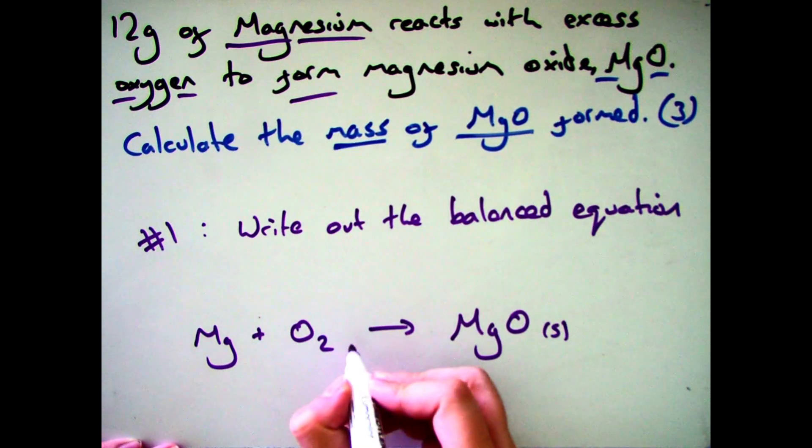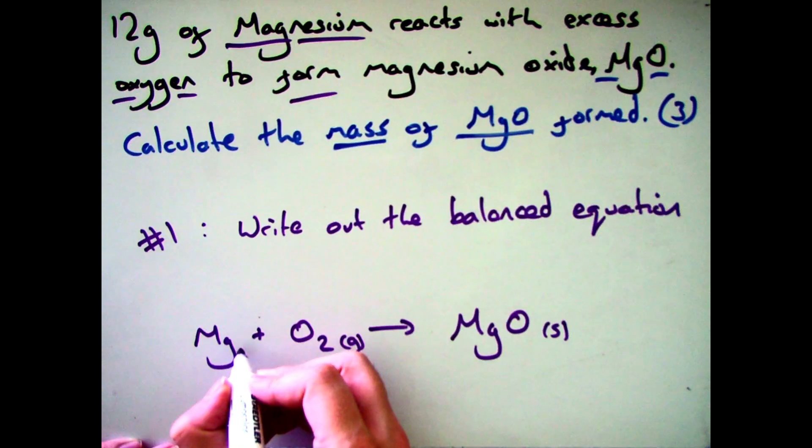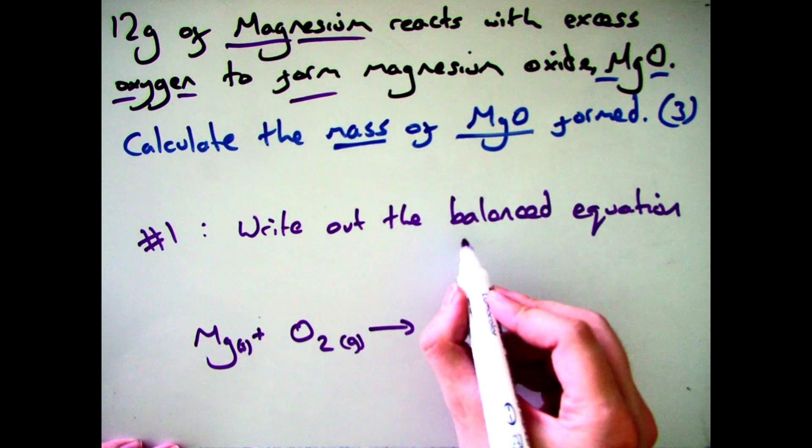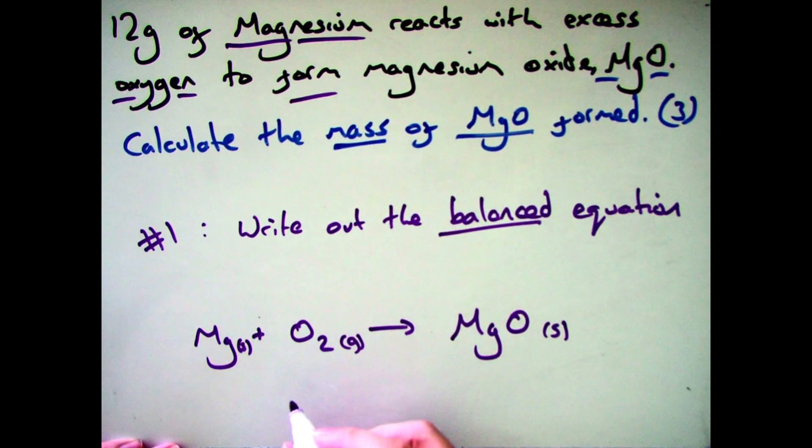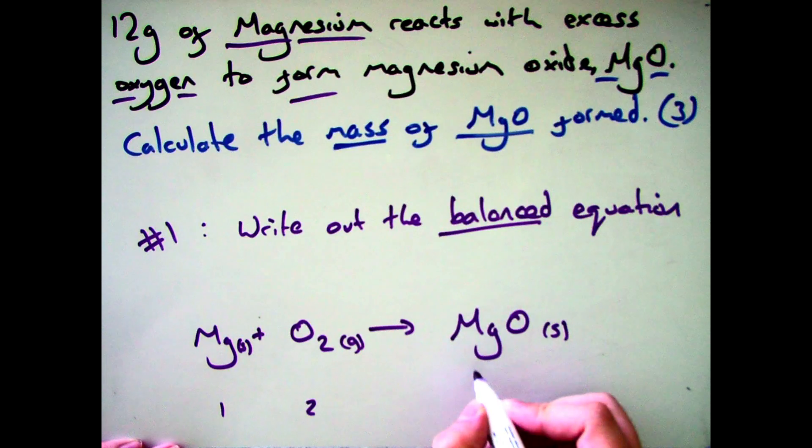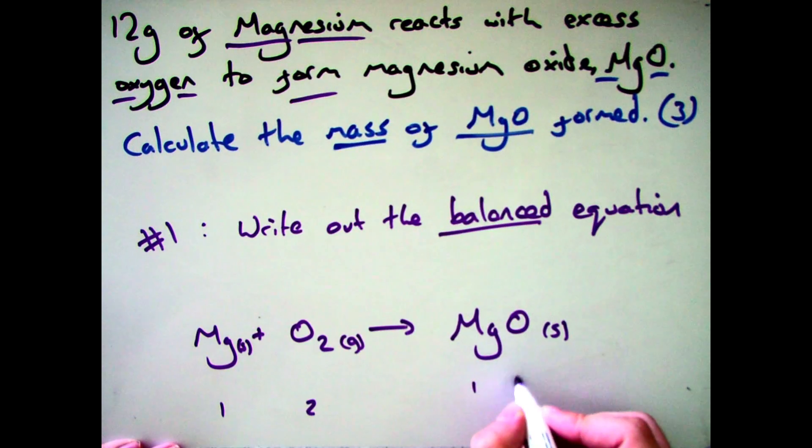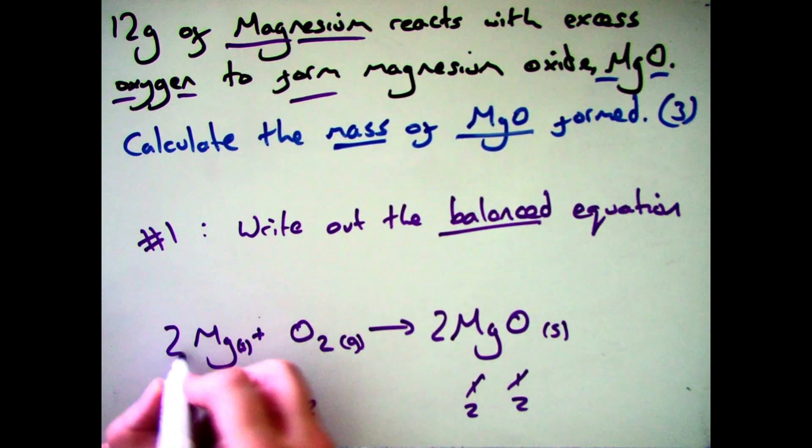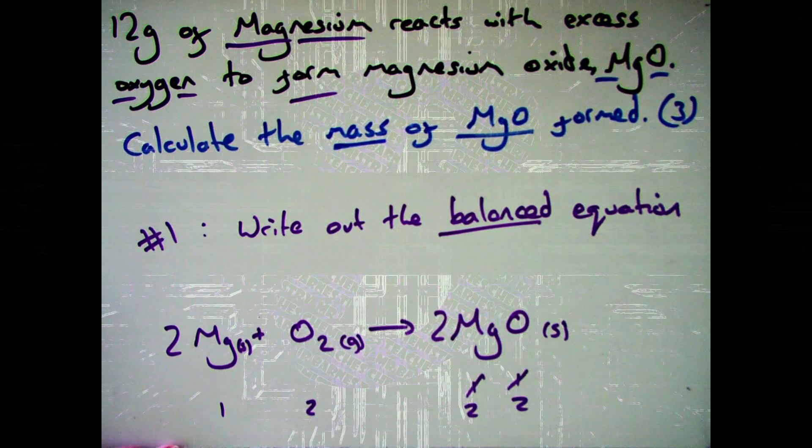Now it's usually a good idea to put the state symbols in but it's not massively necessary for this question. So now we need to balance it then. So count up the number of atoms you have on either side. So I have two oxygens and one magnesium on the left and one magnesium and one oxygen on the right. So let's balance the oxygens then. So I'll put a two in front of MgO and recount. That gives me two oxygens and two magnesiums. Then all I need to do is put a two in front of the magnesium and we're balanced.